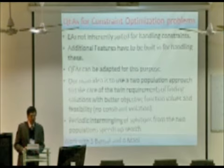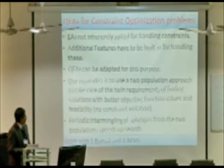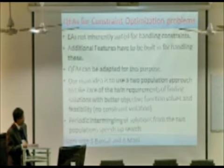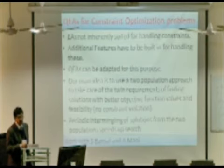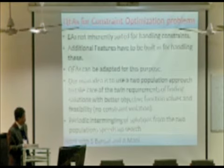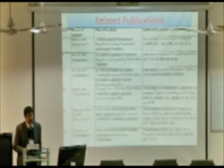Then evolutionary algorithms are not geared for constraint optimization. Constraint optimization has to be built into the evolutionary algorithms separately. And the good thing about quantum evolutionary algorithms is that it provides a very broad framework and you can bring in different ideas. So, constraint optimization can also be brought in. So, what we did was our main idea is to use a two population approach. Because now we have two requirements in constraint optimization. We want to find solutions with better objective function values and at the same time we want to ensure feasibility in the sense that there should be no constraint violation in the final solution. Therefore, we use two different populations for these two different objectives that we have in mind. And then periodic intermingling of solutions from the two populations speeds up the search. So, this is part of the work done by one PG student and one PhD student. And these are the places where we have published some of the results based on quantum evolutionary algorithms for constraint optimization.